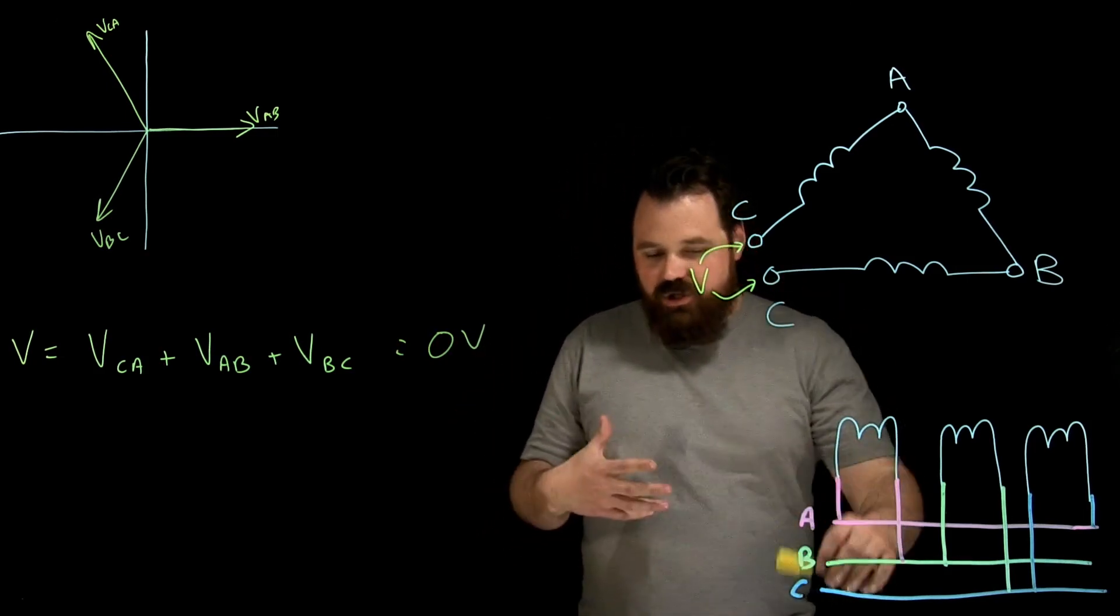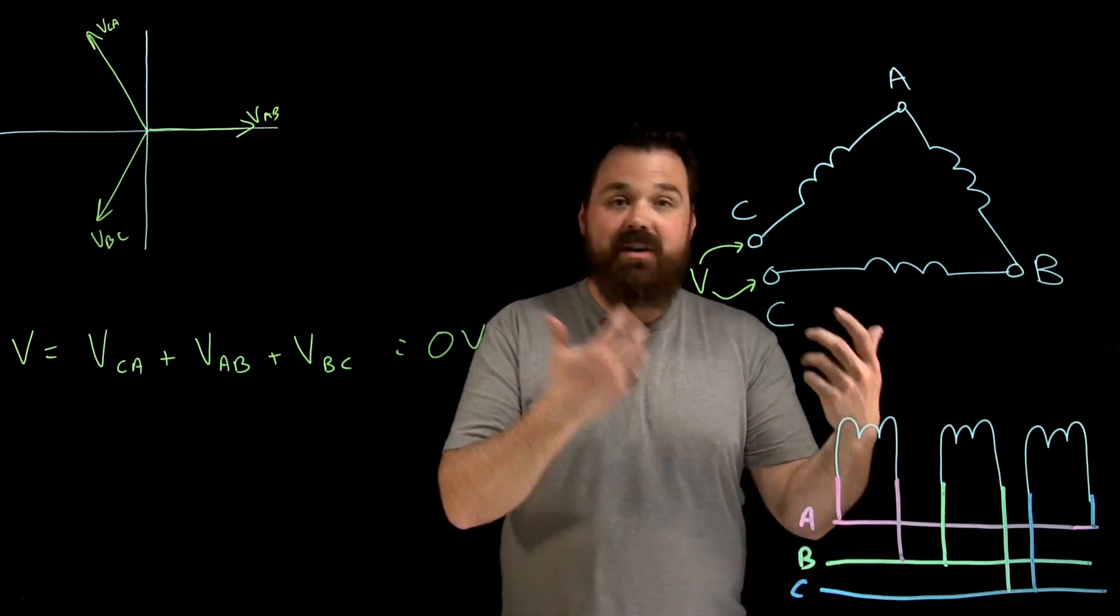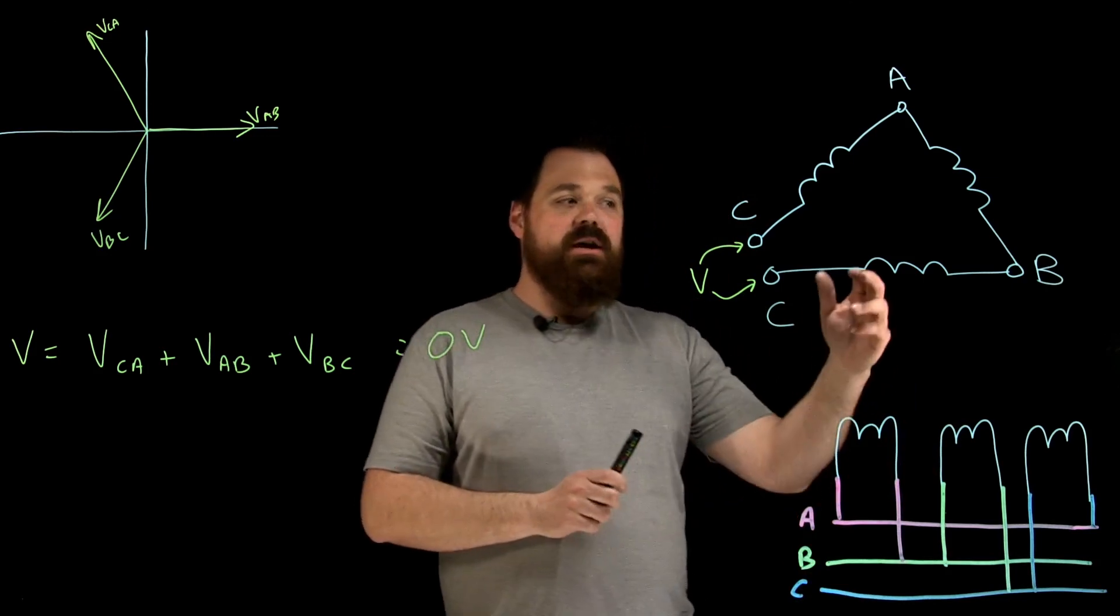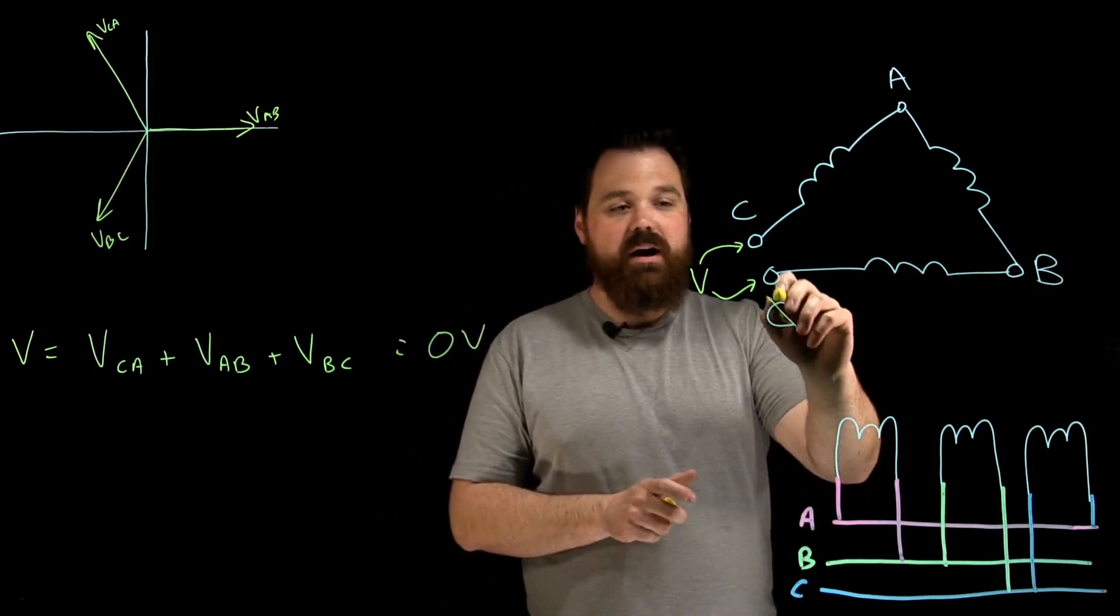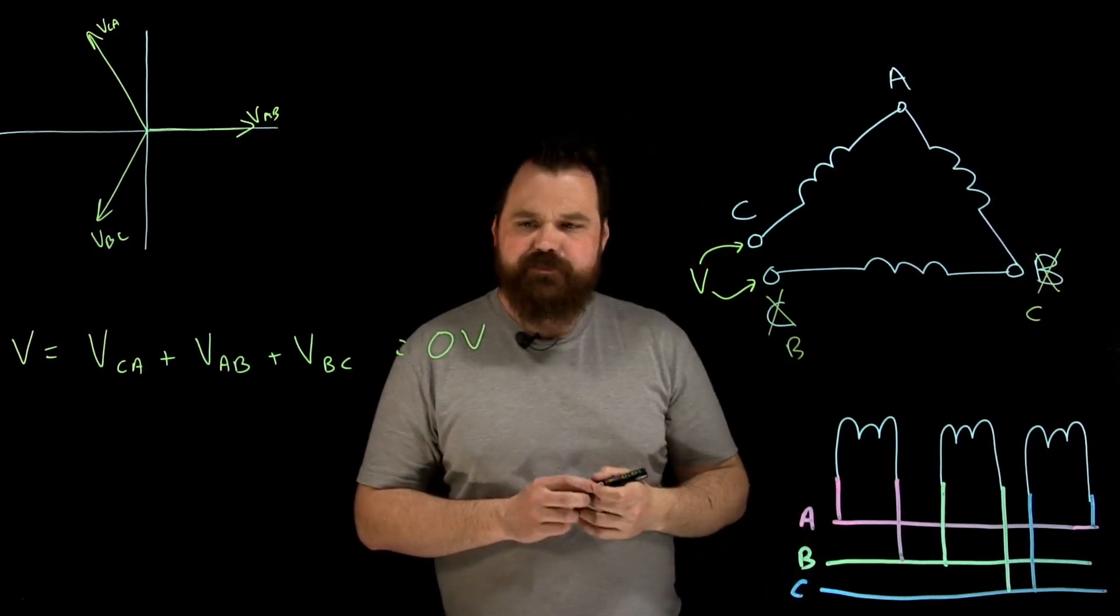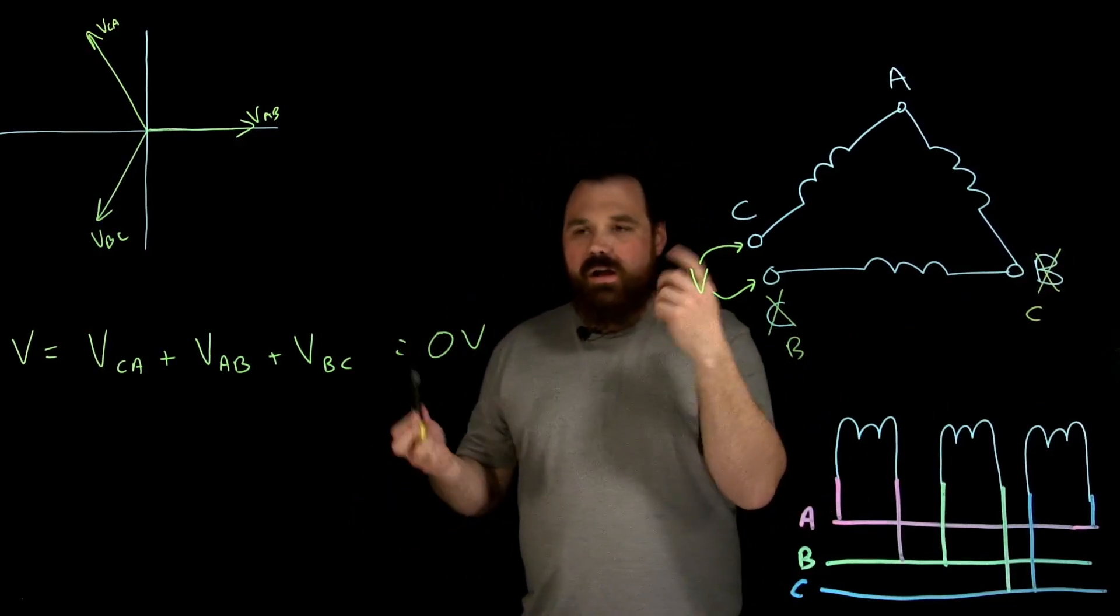Now, the question comes up is what would happen if one of these we had wired accidentally backwards. So maybe instead of it being B to C, I actually had C to B down here. Well, how would that look?